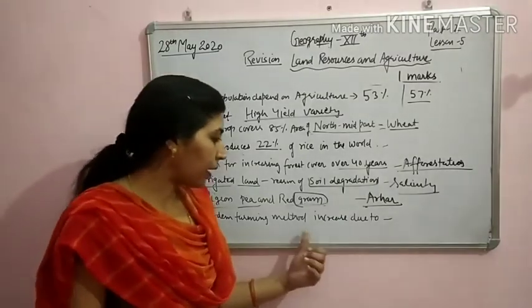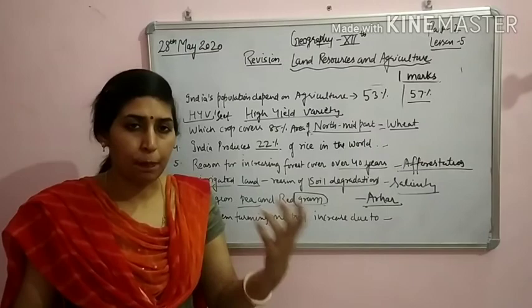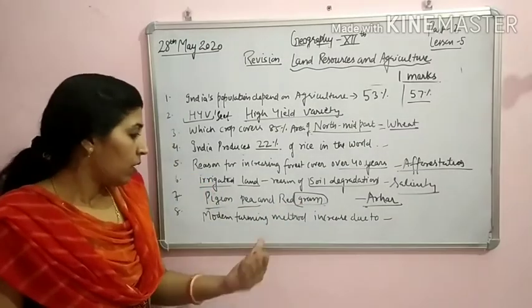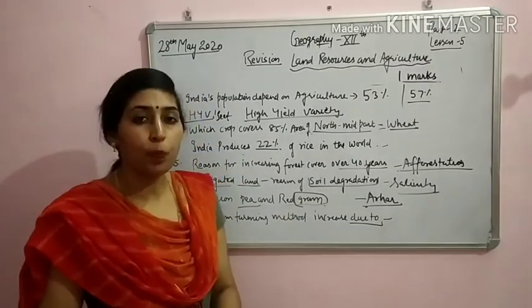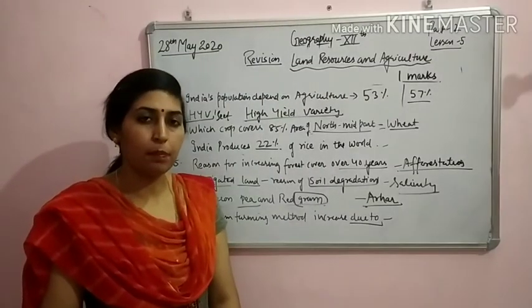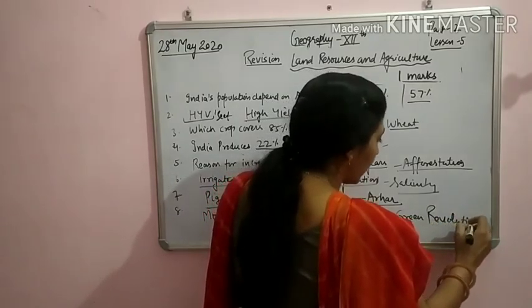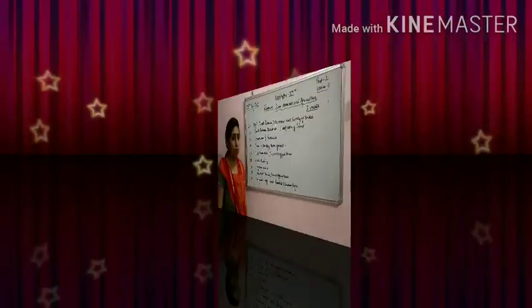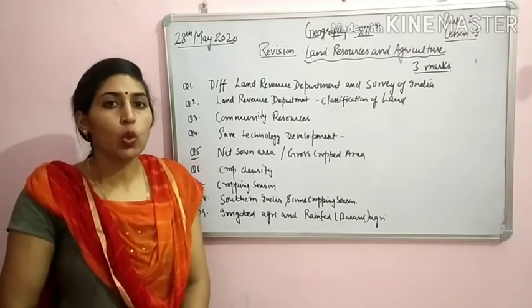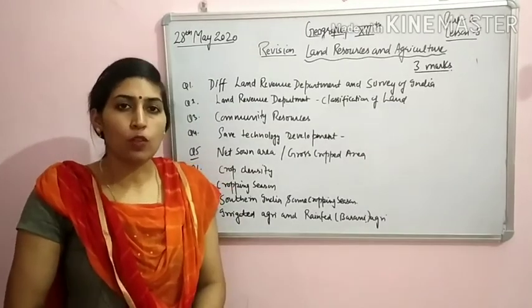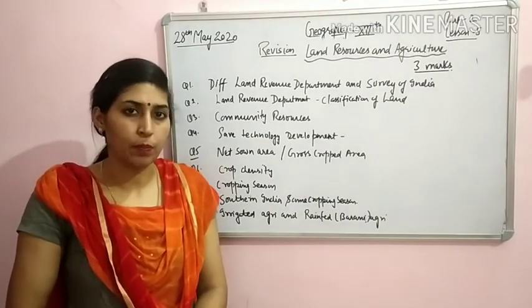Next: modern farming methods have increased in India. Many farmers are now using modern methods to increase production and yield — using modern equipment and new techniques. In India, we started modern farming methods during the Green Revolution, that is mid-1960s. When we learn and revise three-mark and five-mark questions, one-mark questions are already included in them, so the one-mark questions covered in the chapter are enough.